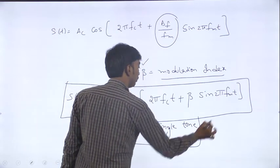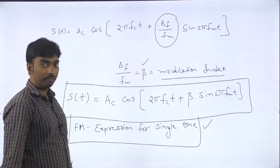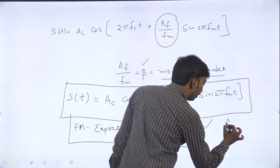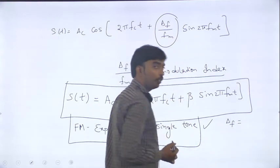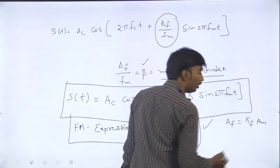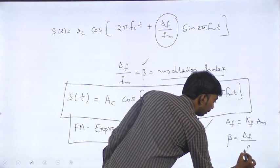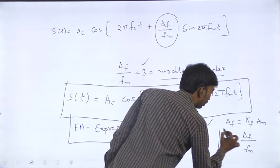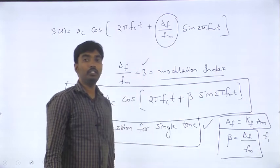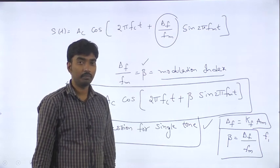There are three conditions we should carefully understand: the frequency deviation Δf, the modulation index β = Δf/fm, and the instantaneous frequency fi. These three parameters are key to understanding frequency modulation.